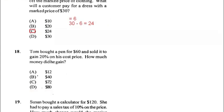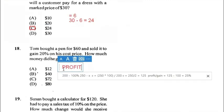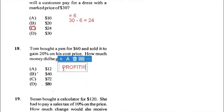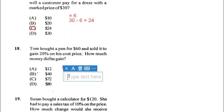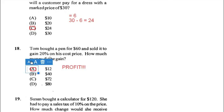Number eighteen: Tom bought a pen for $60 and sold it to gain 20 percent on his cost price. We're looking for the profit, which is 20 percent of $60, equal to $12. Therefore the answer is A.